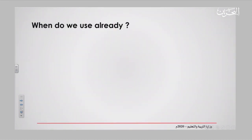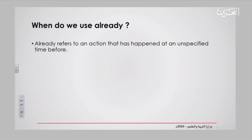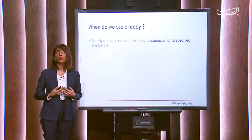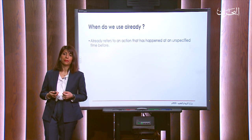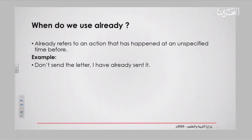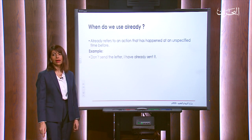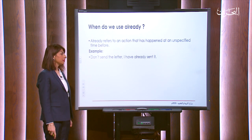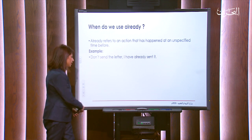When do we use 'already'? Already refers to an action that has happened at an unspecified time before. It means I don't want to tell you exactly when the action happened — it's not essential to specify the time. For example: 'Don't send the letter, I have already sent it.' It's not essential to say I sent it yesterday or this morning. I just want you to know it's done — don't repeat the action.